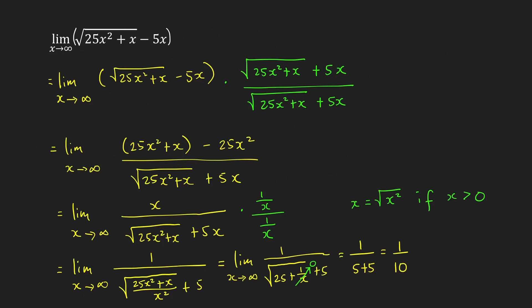Because the limit at positive infinity exists and equals 1/10, we can conclude that the line y equals 1/10 is a horizontal asymptote of the function g.